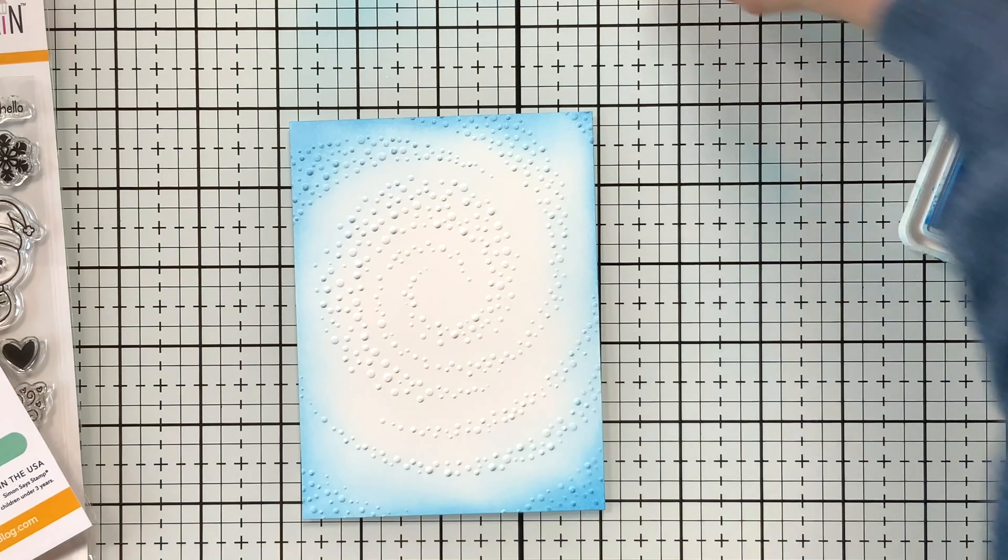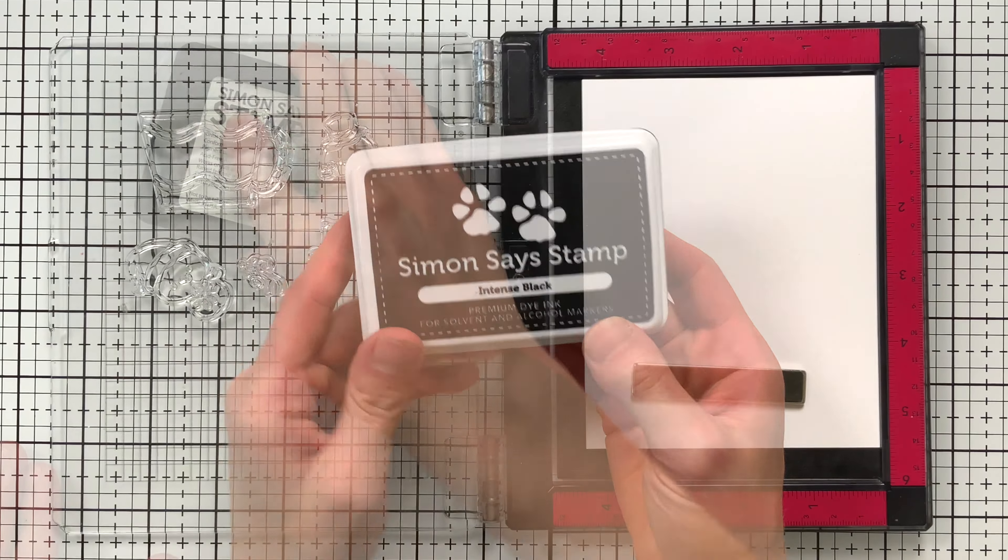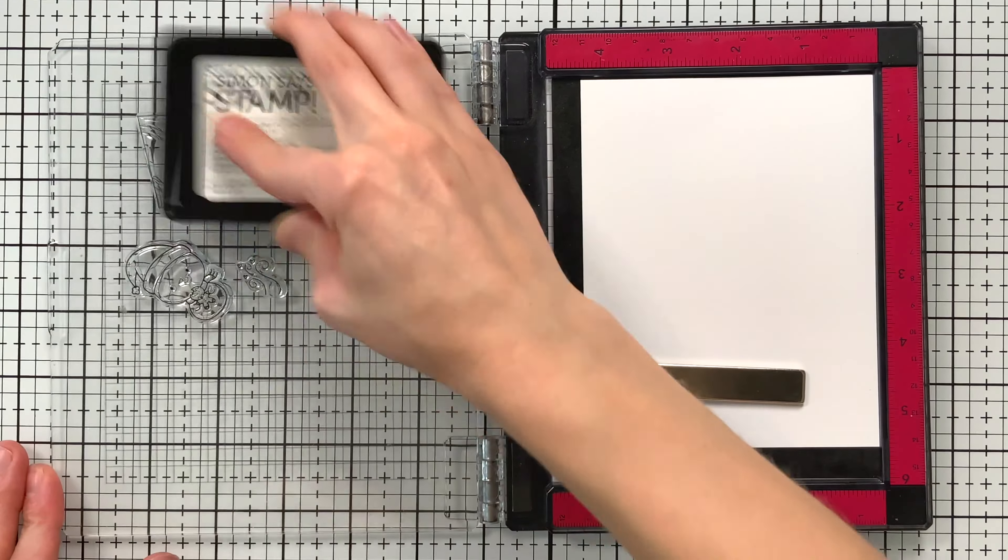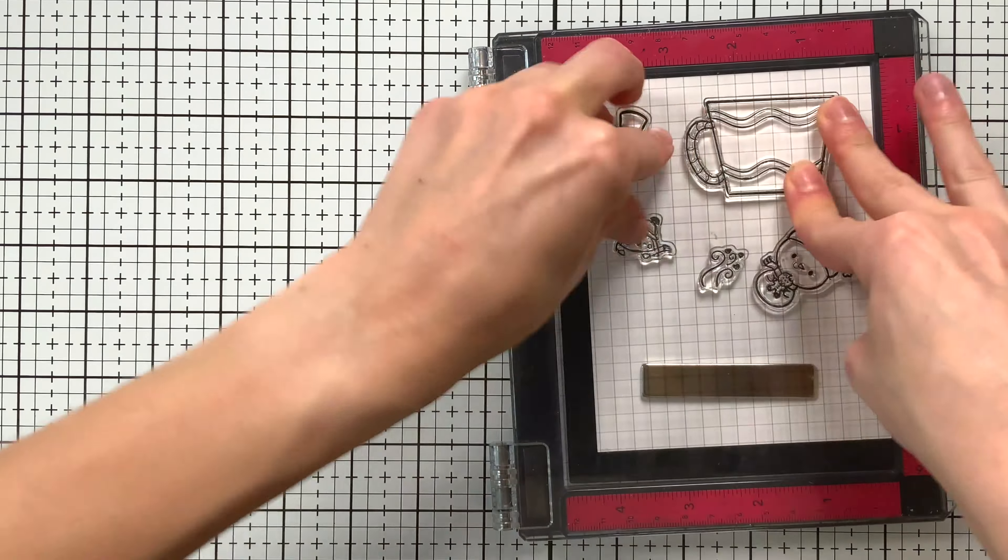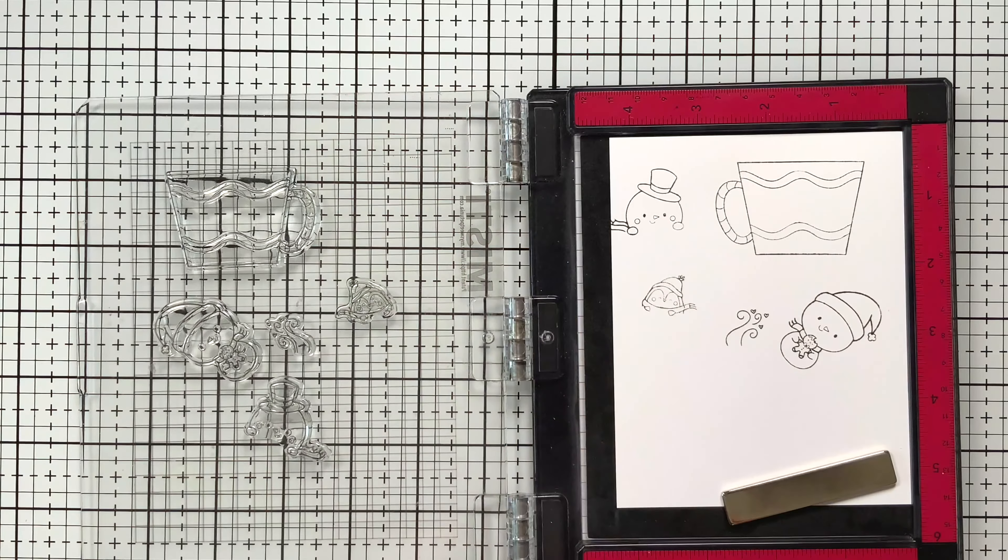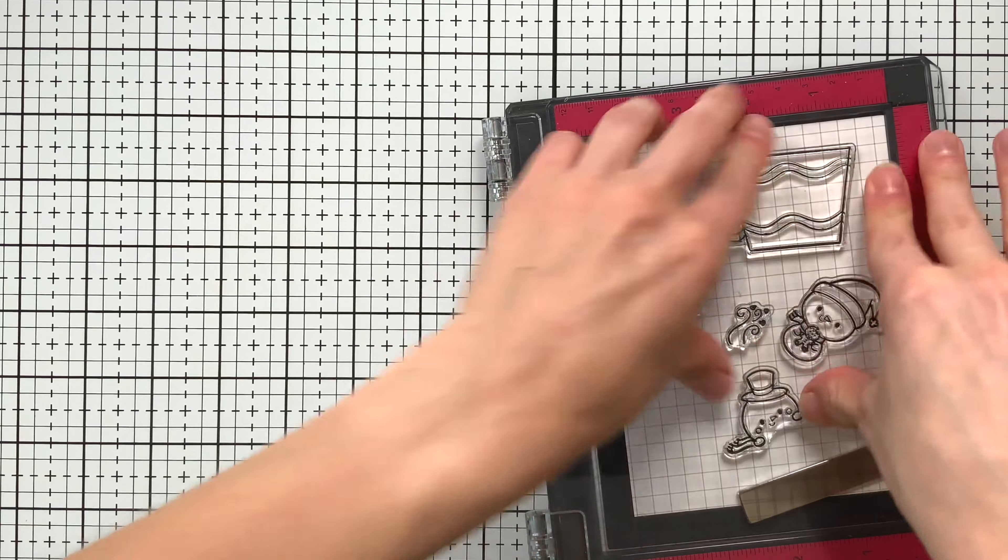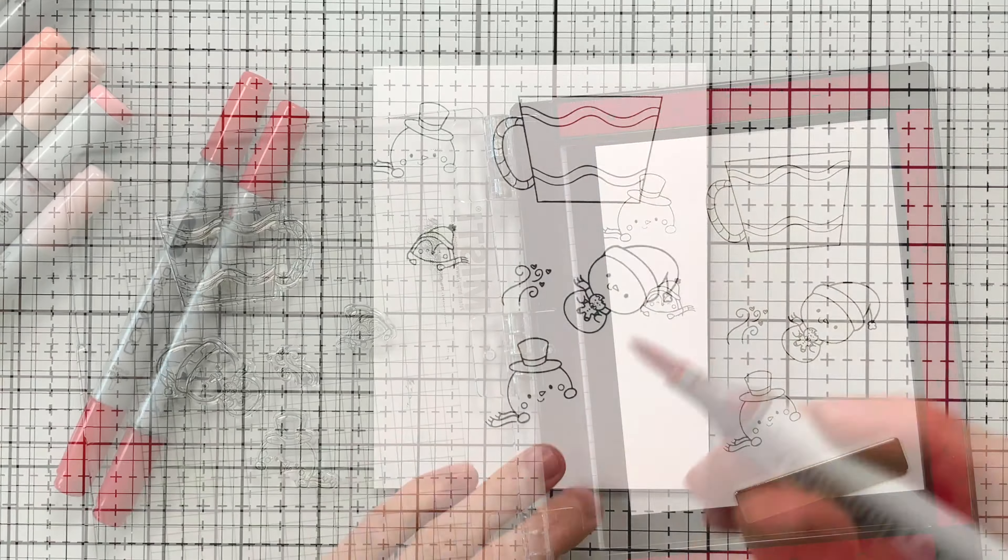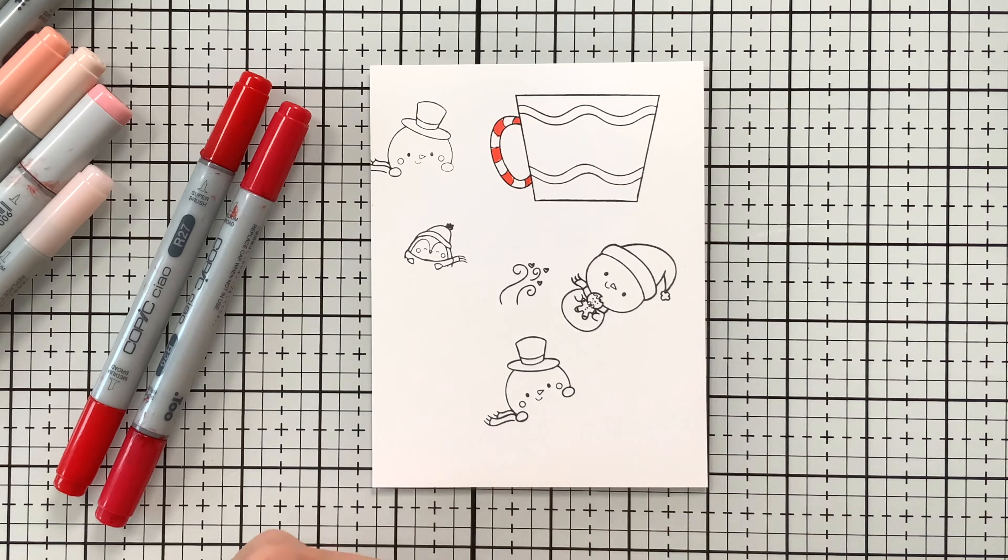Moving on to some stamping, I'm inking up the images from the stamp set with Simon Says Stamp Intense Black ink, and I'm going to be stamping these onto some Hammermill white cardstock. As you can see, I had a stamping fail here. I don't know why I lined up that snowman on that left side because obviously it didn't fit on the paper, so I had to re-stamp him. But once I had all of my images stamped, now I can work on coloring.